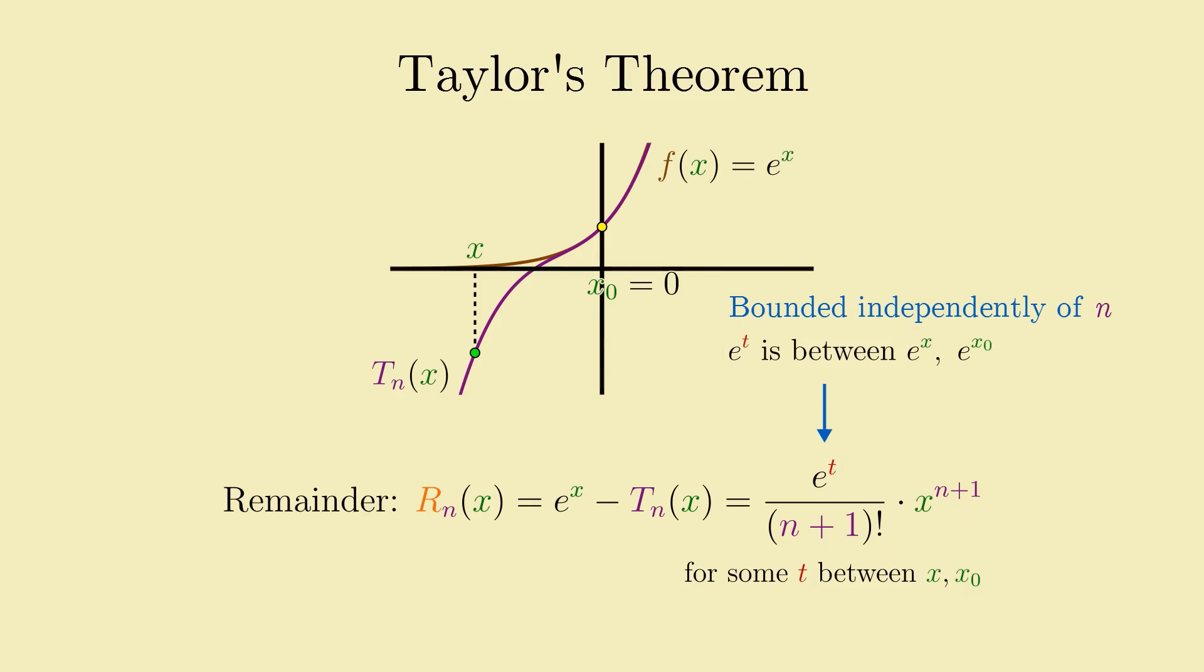Thus, as we increase the order of our Taylor approximation, that is, as we increase n toward infinity, this entire remainder term approaches 0, since the n plus 1 factorial in the denominator will overpower the geometric factor of x to the n plus 1 in the numerator, and the e to the t factor can't do anything to stop it, since it's bounded between two constants. Thus, as n increases, the remainder of the Taylor approximation approaches 0, and so we can safely say the Taylor series converges exactly to the original function e to the x at all x values.